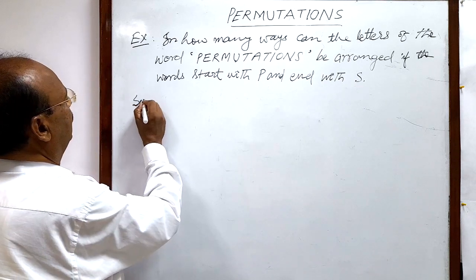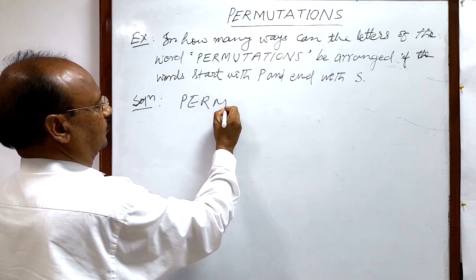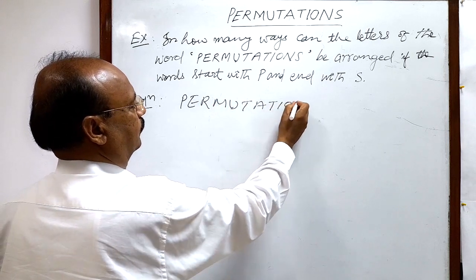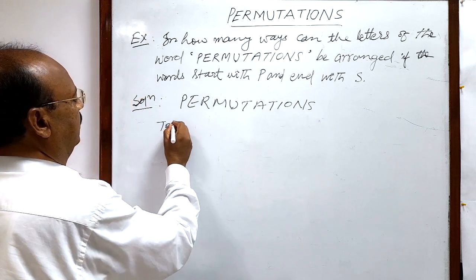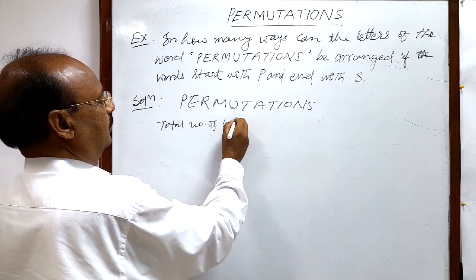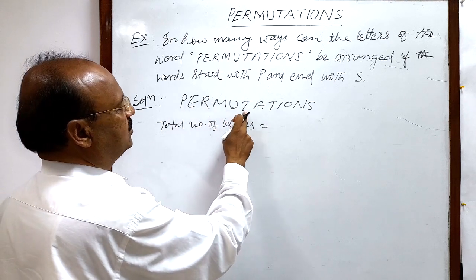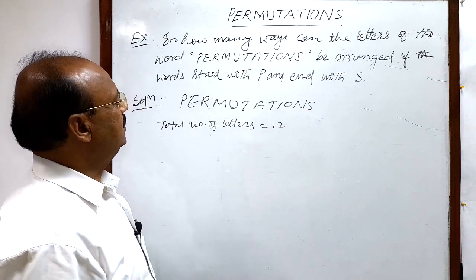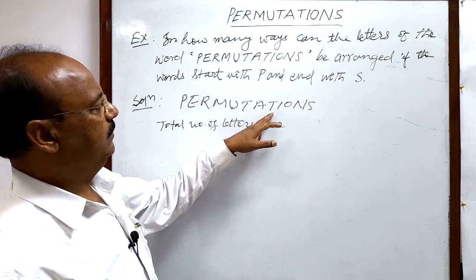The given word is PERMUTATIONS. The total number of letters is 12 — counting 1, 2, 3, 4, 5, 6, 7, 8, 9, 10, 11, 12. And there is a repetition of T twice, so the number of T's is 2.